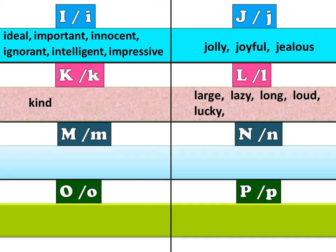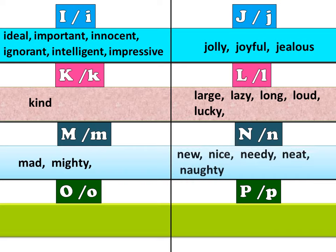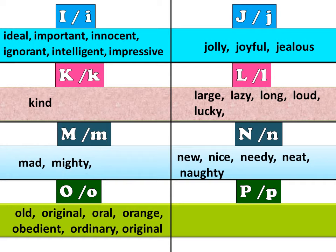M: mad, mighty. N: new, nice, needy, neat, naughty. O: old, original, oral, orange, obedient, ordinary.